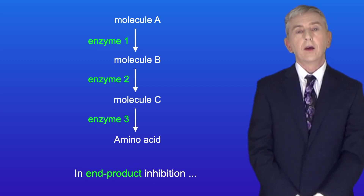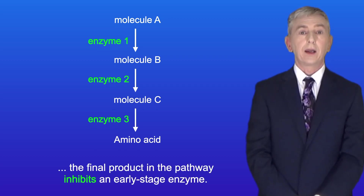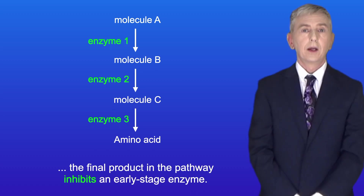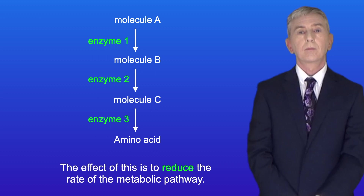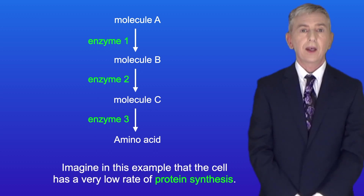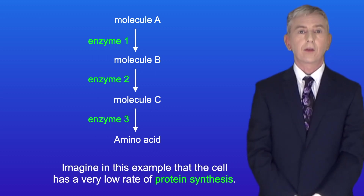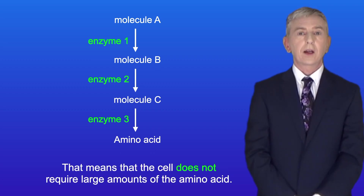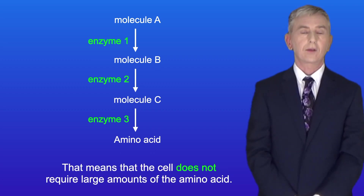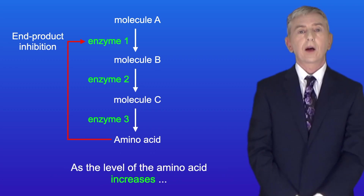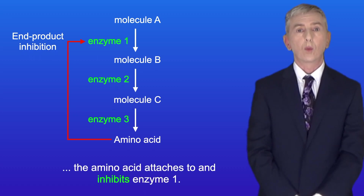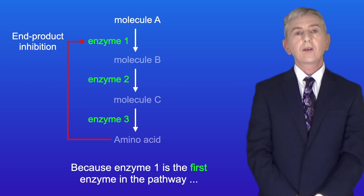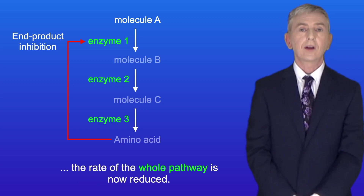In end product inhibition, the final product in the pathway inhibits an early stage enzyme, and the effect of this is to reduce the rate of the metabolic pathway. Imagine in this example that the cell has a very low rate of protein synthesis — that means the cell does not require large amounts of the amino acid. As the level of the amino acid increases, the amino acid attaches to and inhibits enzyme 1. Because enzyme 1 is the first enzyme in the pathway, the rate of the whole pathway is now reduced.